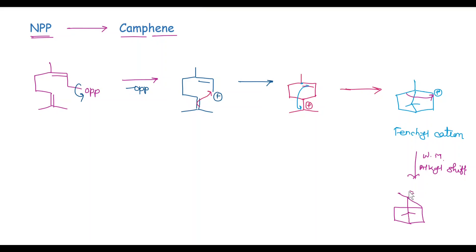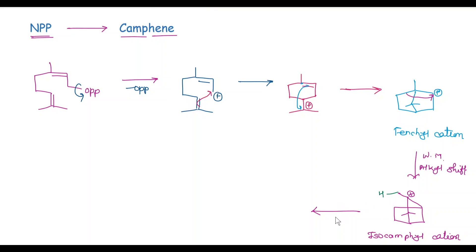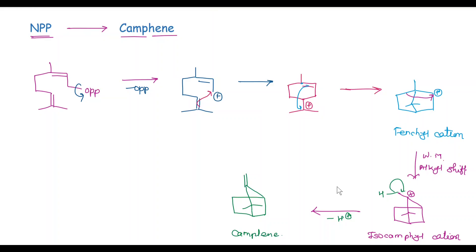Here, a new positive charge is formed. And this cation is called as Isocamphane-cation. In the next step, loss of this proton takes place — that is minus H. And we get this moiety with a double bond, and this is called as Camphor.